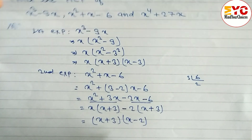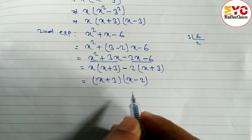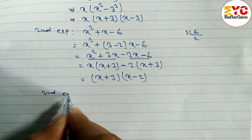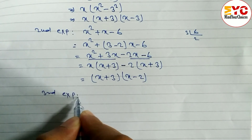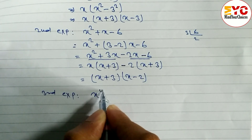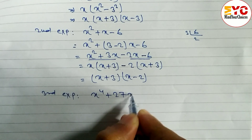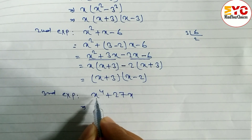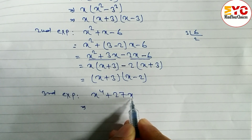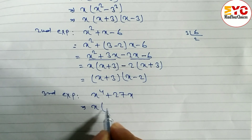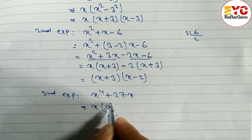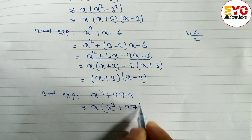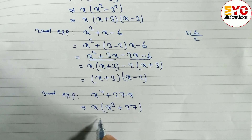After this we have to take the third expression. You can see here in the third expression: x power four plus 27x. First of all we take x common, so the remaining is x cube plus 27.